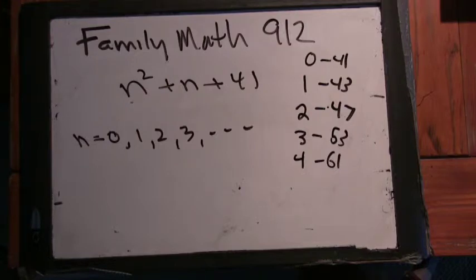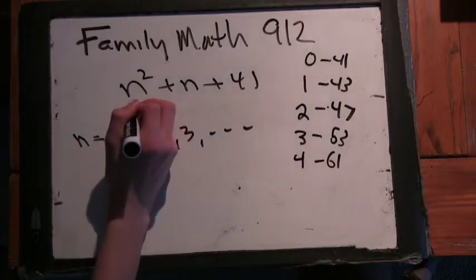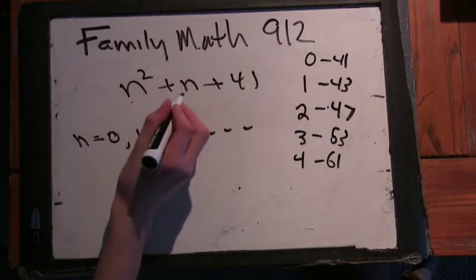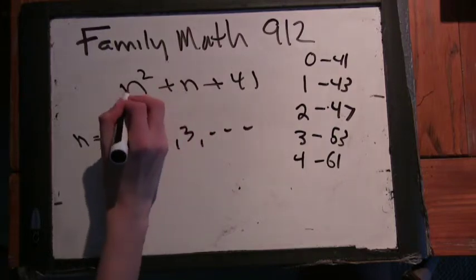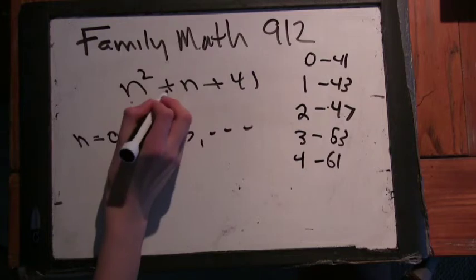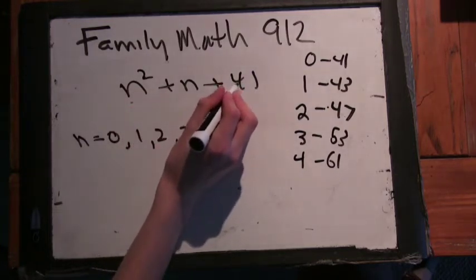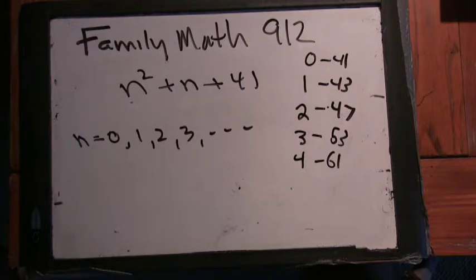That's always going to be even number, because if you have an even number as n, you get n squared is going to be even plus an even number. It's going to be even. Odd number, you get odd number squared is odd, plus an odd number, that's even. So you're always going to get an odd number from this. Oh, okay. Good. Good. That's a great reason.